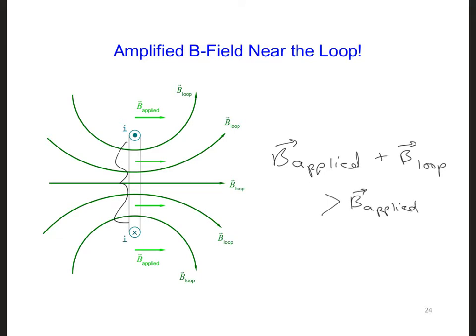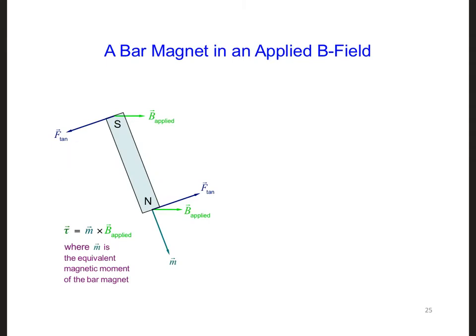So another way to look at the rotation of the loop in the applied B field is that the current loop wants to rotate until its own B field is aligned with the applied B field. Other materials and objects that have a magnetic field or a magnetic moment will also want to have their magnetic fields align with any applied magnetic field.